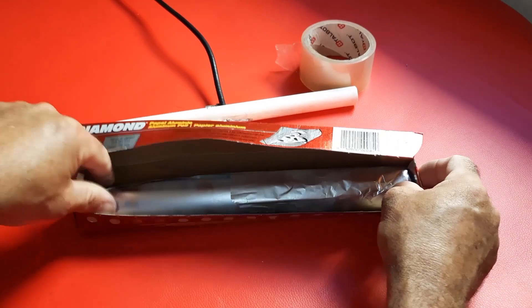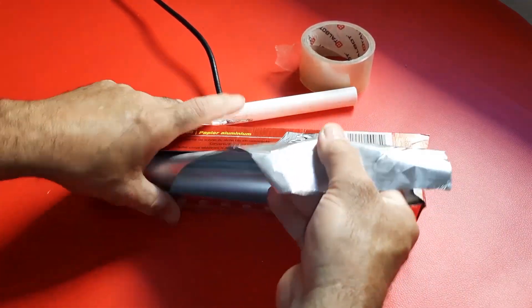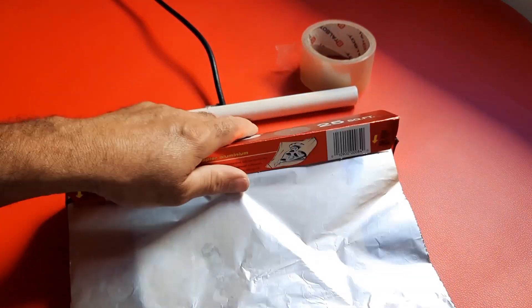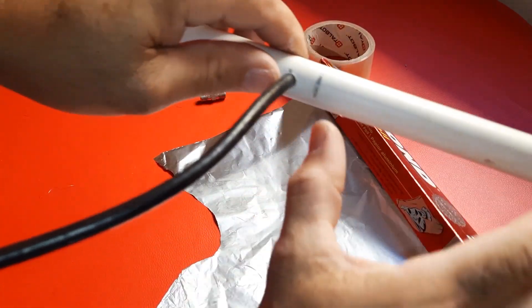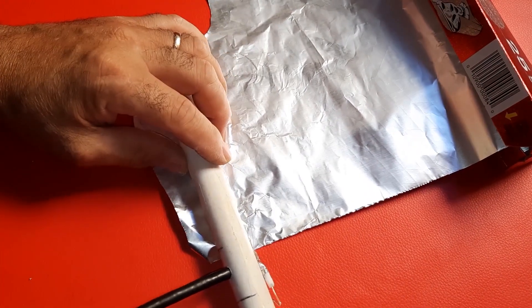5. Use kitchen aluminum foil and, starting from the 14 cm mark on the PVC pipe, wrap the aluminum foil around it. Ensure that each end of the coaxial cable makes contact with the aluminum foil.